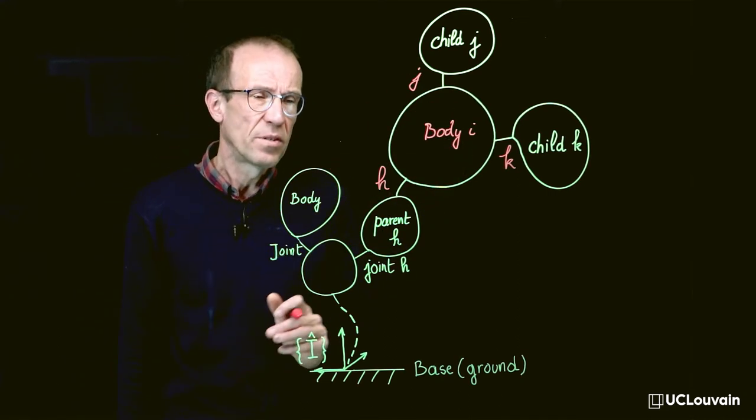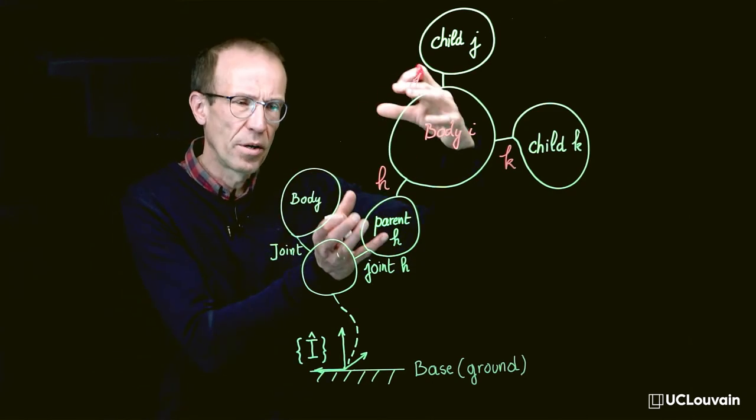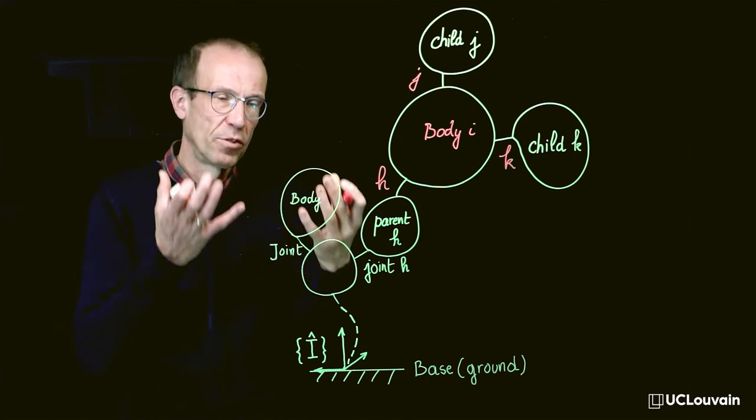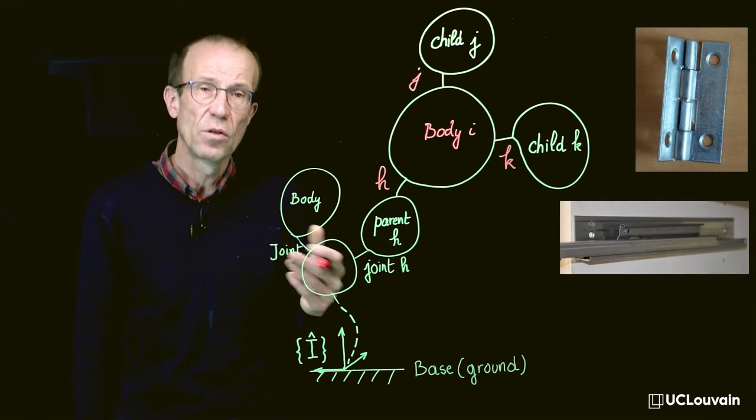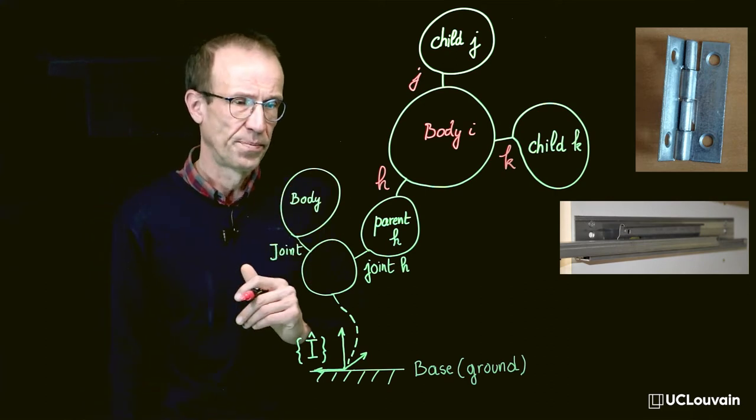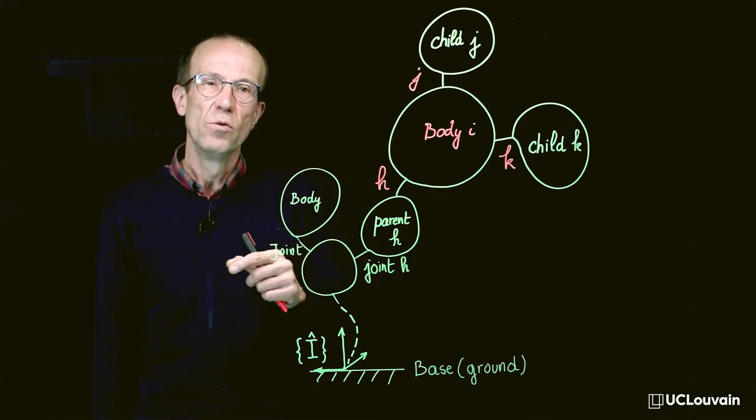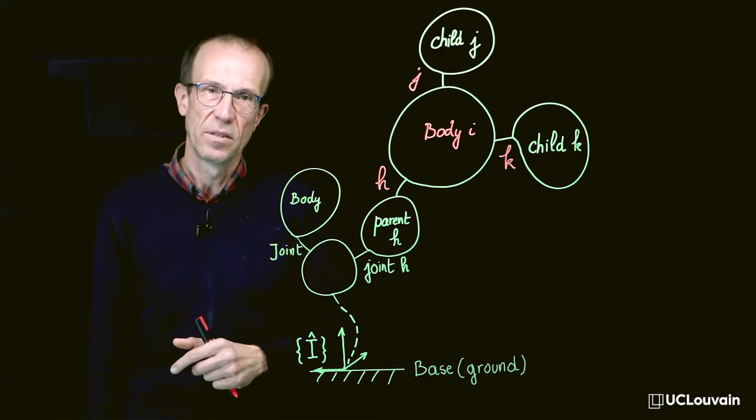Joints represent devices that allow relative motion between bodies. They can be revolute motion or prismatic motion. Hinges and sliders represent some kinds of joints. The internal motion within these joints will represent the degrees of freedom of the multibody system.